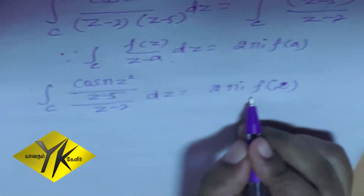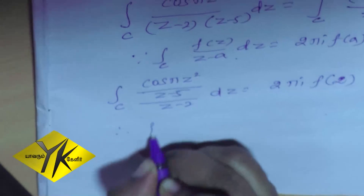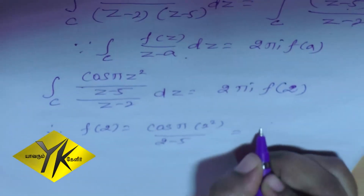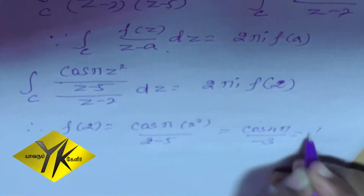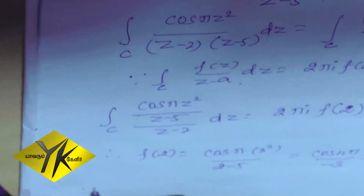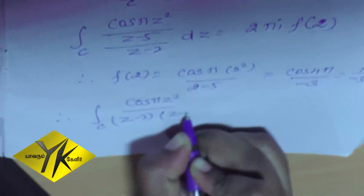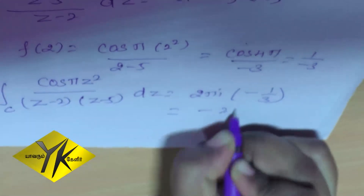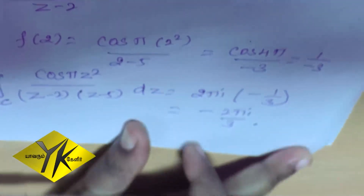To find f(2), we substitute z = 2: f(2) = cos(π · 2²) / (2 − 5) = cos(4π) / (−3). Since cos(4π) = 1, we get f(2) = 1/(−3) = −1/3. Therefore, the integral over C of cos(πz²) / [(z − 2)(z − 5)] dz equals 2πi × (−1/3) = −2πi/3.